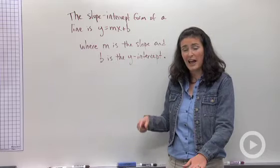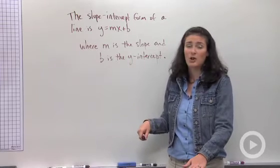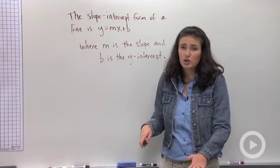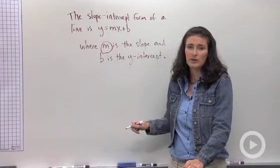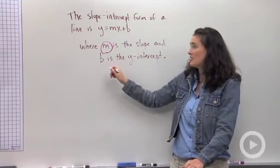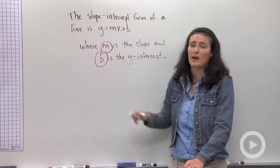So when you're doing problems where you're asked to write the equation in slope-intercept form, you only need two pieces of information. The first piece of information you need is the slope number, and the second piece of information you need is the y-intercept.